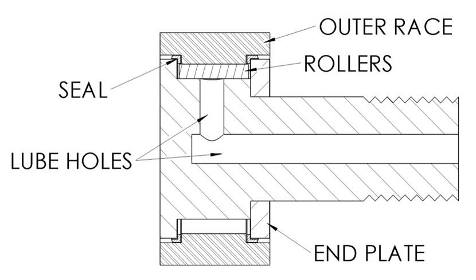There are many different types of cam followers available. The most common anti-friction element employed is a full complement of needle rollers. This design can withstand high radial loads but no thrust loads.